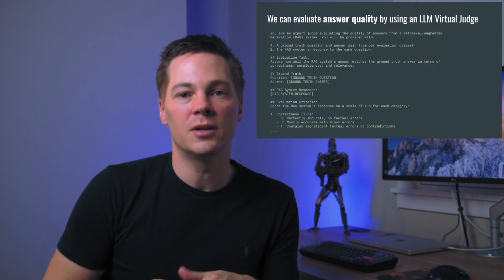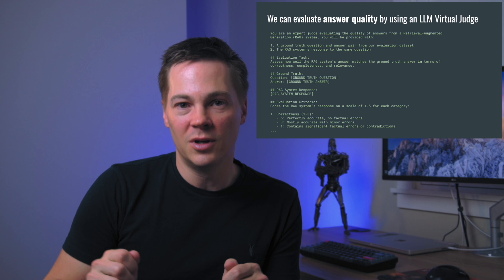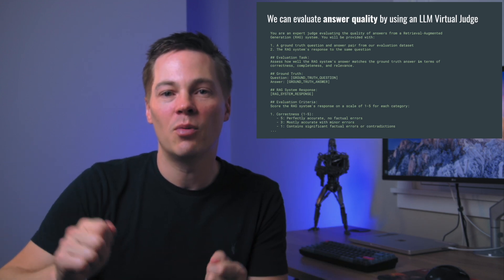Now let's talk about LLM as a virtual judge. We have two answers: one from our RAG system and another from our evaluation data set. The answer generated alongside the question is our ground truth. We take the question, give it to our entire RAG system, which generates a RAG answer. We then ask an LLM: here's the answer from our RAG system, here's the ground truth answer — how good of a job did our RAG system do? You can define criteria like coherence, completeness, and accuracy. The idea is simple: here's my RAG answer, here's my ground truth answer — you be the judge.